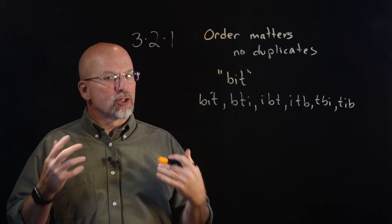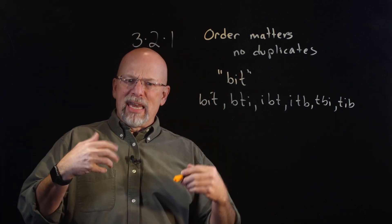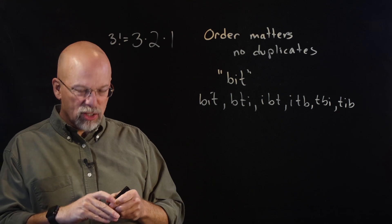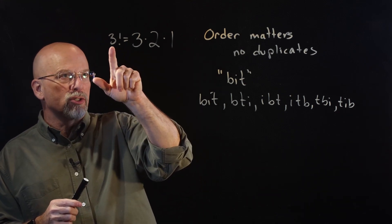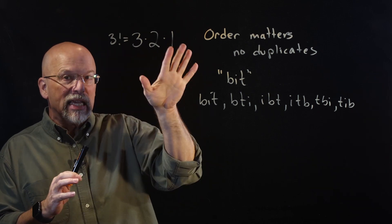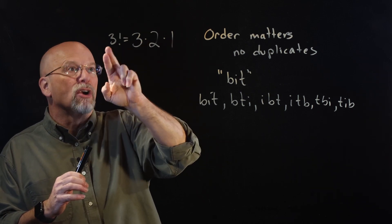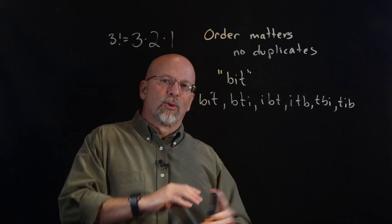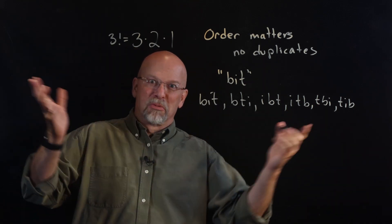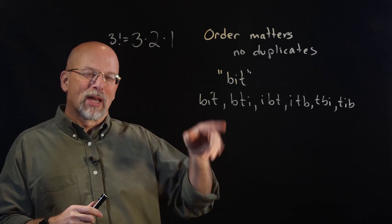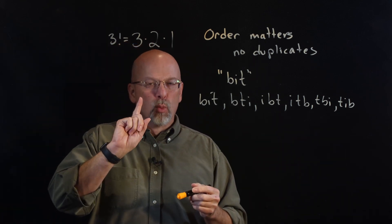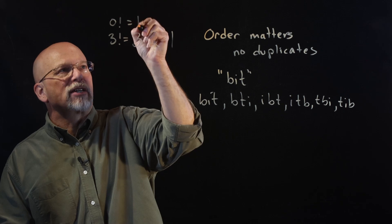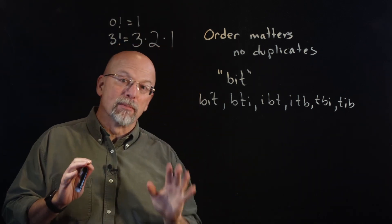This particular formula is used so much in mathematics that it's given a name — it's called a factorial, represented with an exclamation point. Three factorial is 3 × 2 × 1; it's all the integers from that number down to one. One factorial is just one, two factorial is 2 × 1, three factorial is 3 × 2 × 1. There is one special definition: zero factorial is always equal to one. We'll show why that's important in a minute.